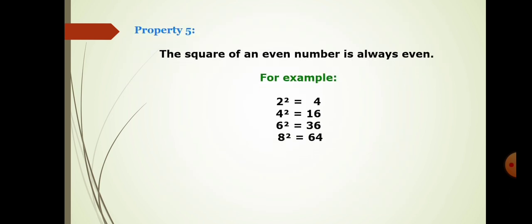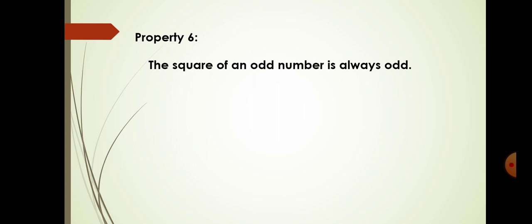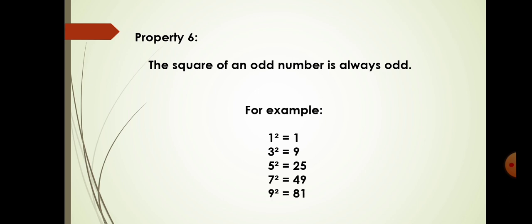Property number 5: The square of an even number is always even. For example, 2 squared is 4, 4 squared is 16, 6 squared is 36, and 8 squared is 64. Property number 6: The square of an odd number is always odd. For example, 1 squared is 1, 3 squared is 9, and 5 squared is 25 — all squares of odd numbers are odd.